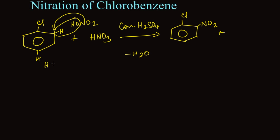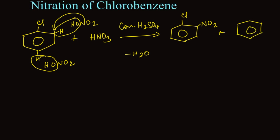In the same way, if the reaction takes place in the para position, the hydrogen from the chlorobenzene and OH from the nitric acid will leave as H2O, and this NO2 will replace the para position hydrogen, so we get 1-chloro-4-nitrobenzene.